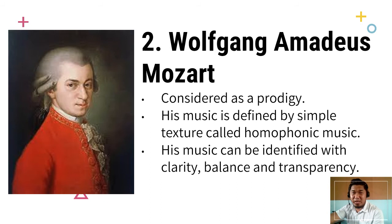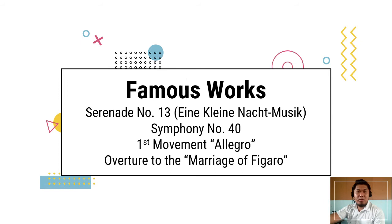His music can be identified by a simple texture called homophonic music. His work shows mastery of creating mood, drama, and atmosphere, and can also be identified with clarity, balance, and transparency. Here are some of his famous compositions: Serenade No. 13, Symphony No. 40 First Movement Allegro, and Overture to the Marriage of Figaro.